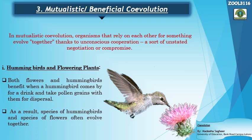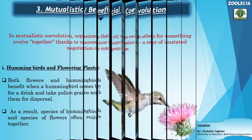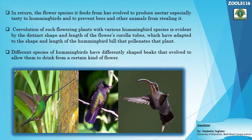Both flowers and hummingbirds benefit when the hummingbird comes for a drink and takes pollen grains for dispersal. As a result, species of hummingbirds and species of flowers often evolve together. Flowers evolve to become more colorful, more presentable, and to produce better-tasting nectar. On the other hand, birds evolve their bills or beaks to better reach the nectar and pollen of the flower.